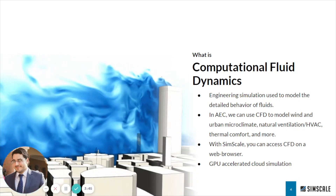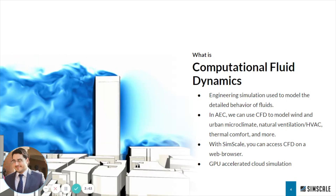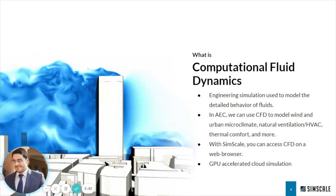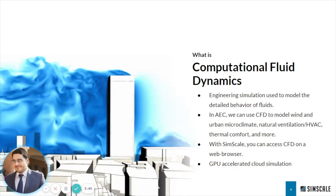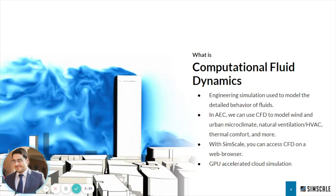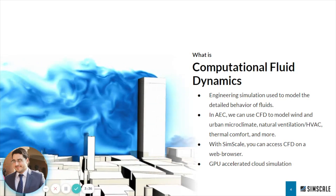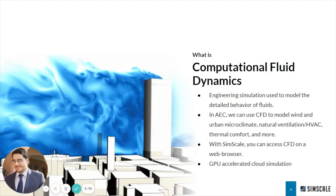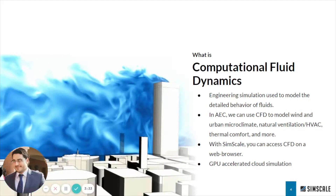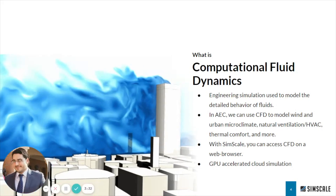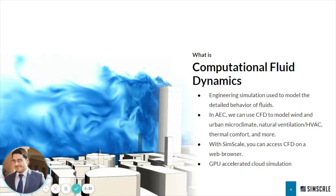In architecture, engineering and construction, we can use CFD to model various things — for example, the wind, urban microclimate, natural ventilation, HVAC and thermal comfort. And with SimScale, you can access CFD on a web browser using GPU-accelerated cloud simulation.